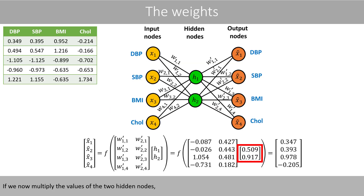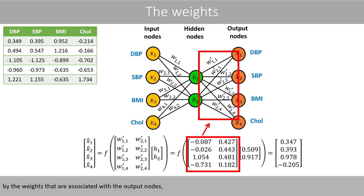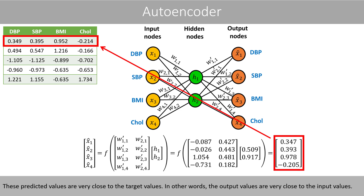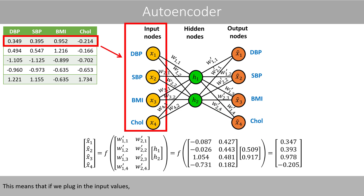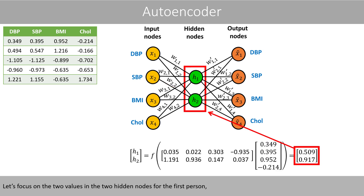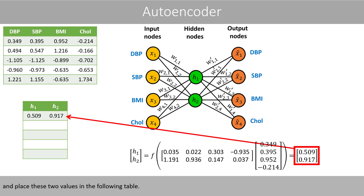If we now multiply the values of the two hidden nodes by the weights that are associated with the output nodes, we can compute the predicted values, which are the values of the output nodes. These predicted values are very close to the target values. In other words, the output values are very close to the input values. This means that if you plug in the input values, the predicted values will be almost identical to the original values.